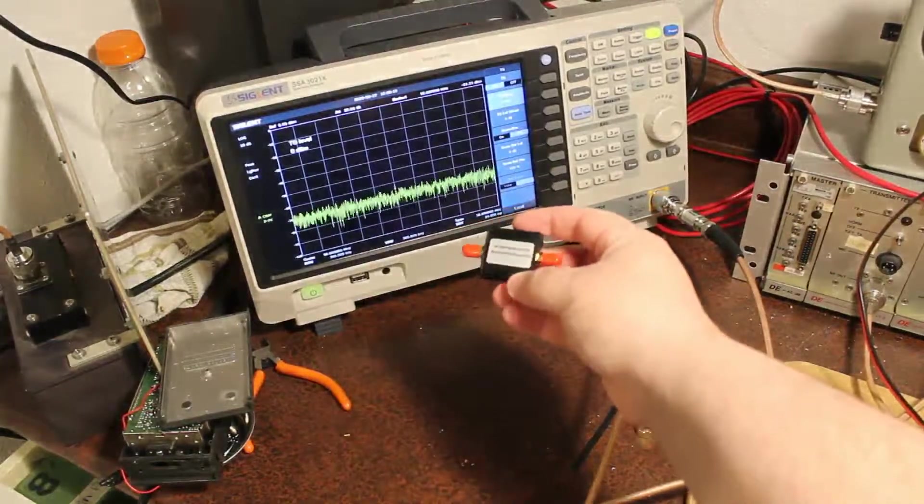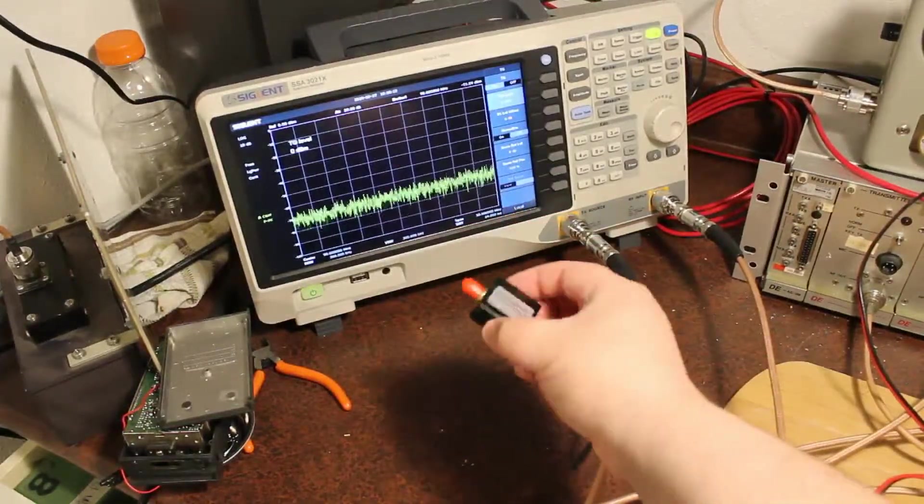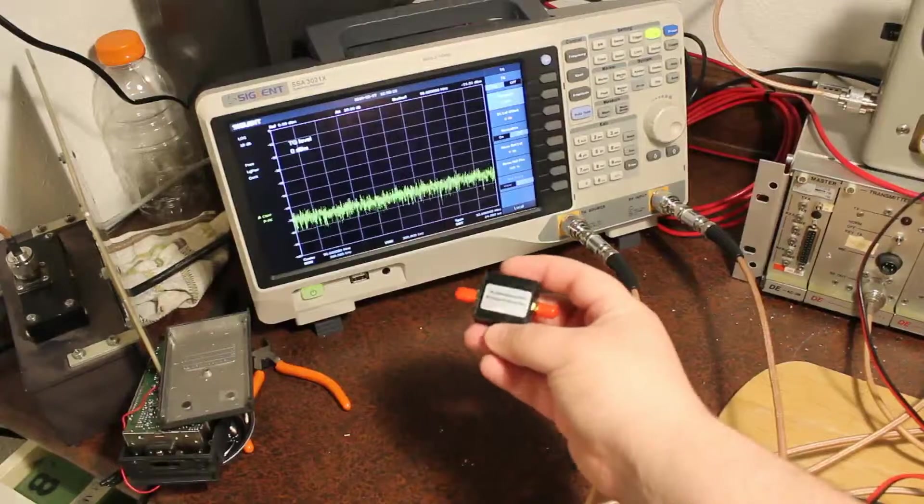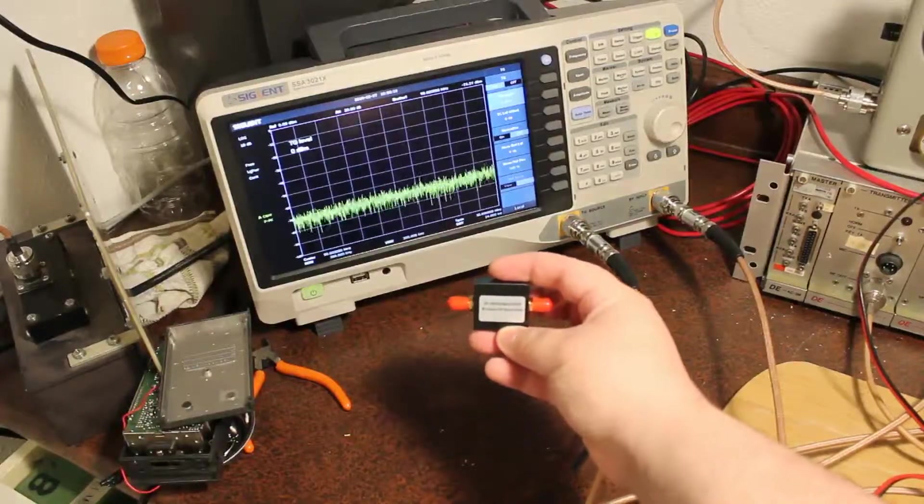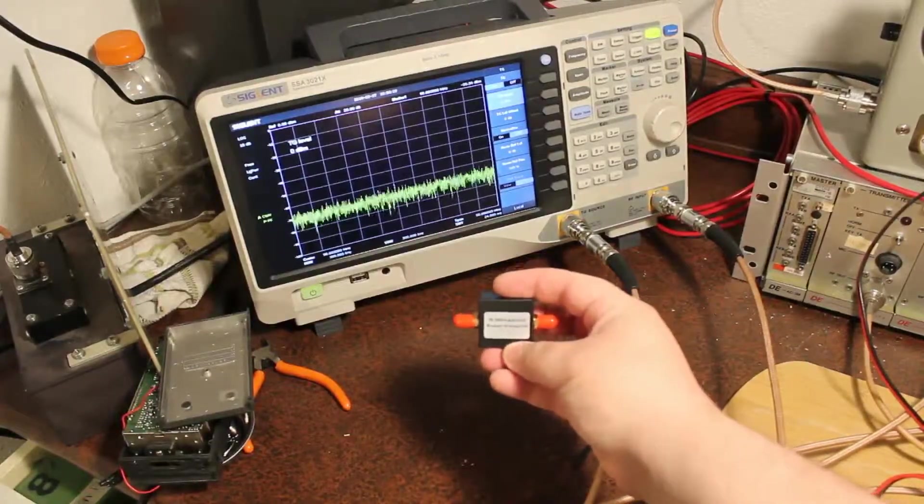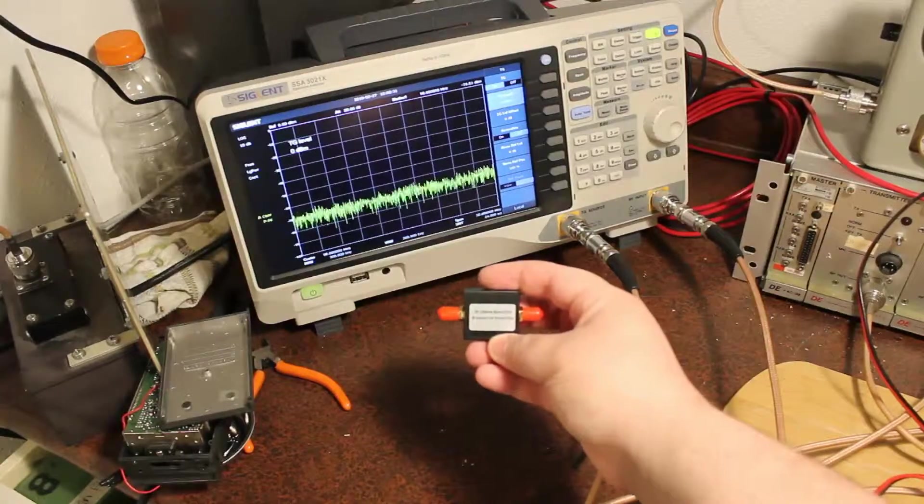So if you've played much in the SDR space, chances are you've looked at something like this. This is a bandstop filter. It's for the FM broadcast band of around 88 to 108 MHz.